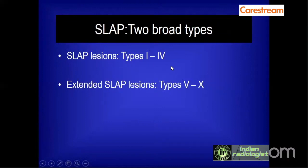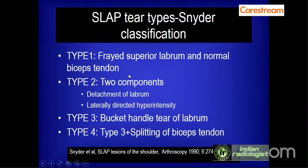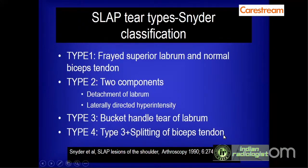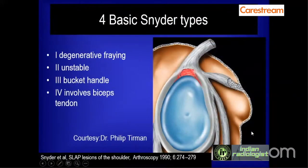SLAP lesions have four main broad types based on the landmark work of Snyder, with extended SLAP lesions classified from Type 5 to Type 10. Type 1 is fraying or degeneration of the superior labrum producing a globular signal, with normal biceps anchor. Type 2 is either a detachment type or a tear type. Type 3 is a bucket handle tear, and Type 4 is Type 3 extending into the biceps tendon, splitting it.